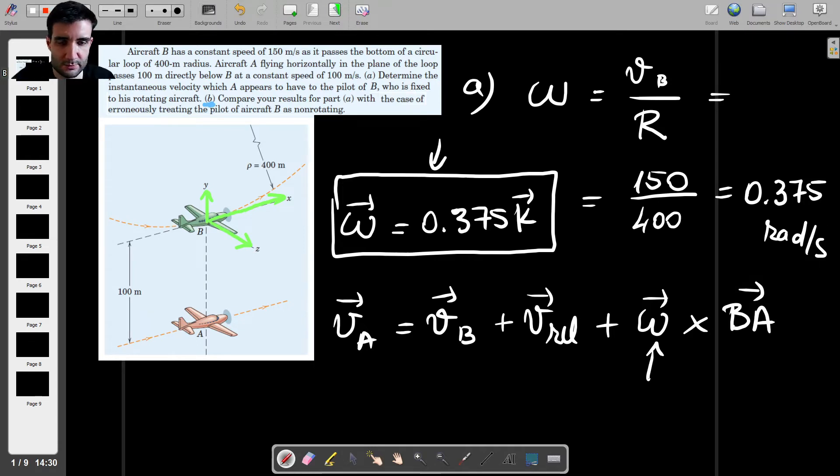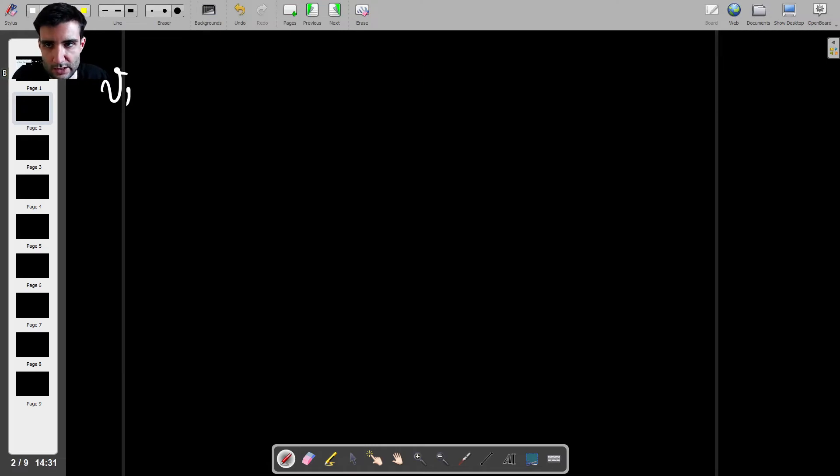So this omega is, of course, the same omega as this, because while this refers to the angular velocity of the axis, we're assuming, we're considering those X, Y, that axis to be fixed to the aircraft labeled as B. So let's try to rearrange and get an expression for the relative velocity. So what we will have is the following. The relative velocity equals the velocity of A minus the velocity of B, and then minus omega cross BA.